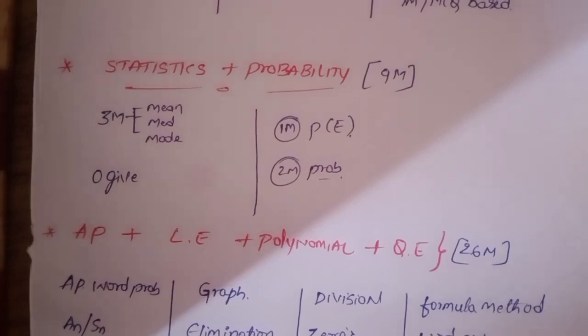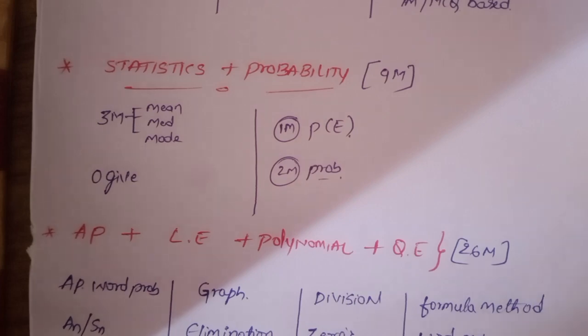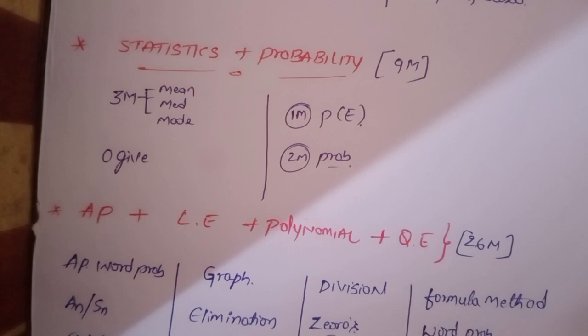Statistics and probability. In statistics, we have mean, one question is there, 3 marks. That is mean, median and mode. Mode is always compulsory and median is optional. Mode and median, one question is three marks. Then easiest one is ogive - less than ogive and more than ogive, two options are there, one of them will be there.